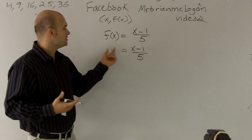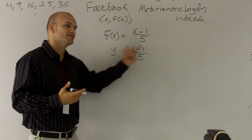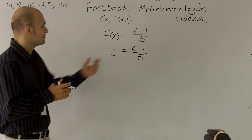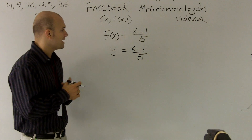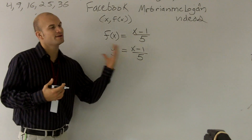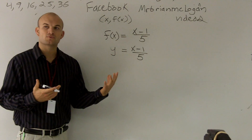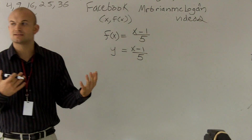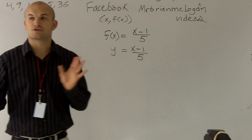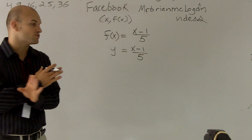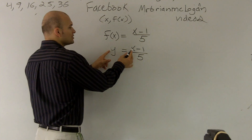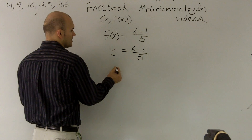If you're graphing it, you have your y-axis and x-axis, and sometimes it makes it a little bit easier to graph when you know it's y equals. So the next thing to remember when finding the inverse is that our x and our y — our domain and our range — are actually switched. So to represent that, I'm going to interchange my x and my y.